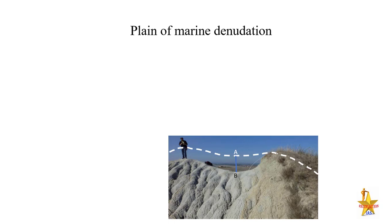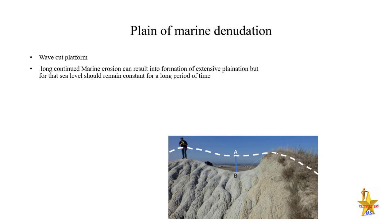The fourth erosional surface is marine denudation. Marine erosion produces wave-cut platforms and related structures. Long continued marine erosion can result in the formation of extensive planation, but for that the sea level must remain constant. Since sea level keeps changing, landforms form and are also eroded continuously, so there is no permanency — meaning we don't get a stable marine erosional surface unless the sea level remains constant for a long time.